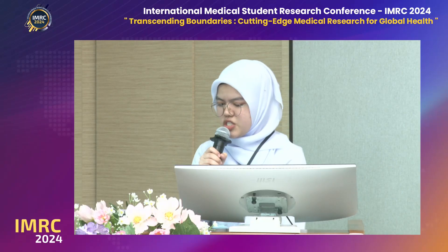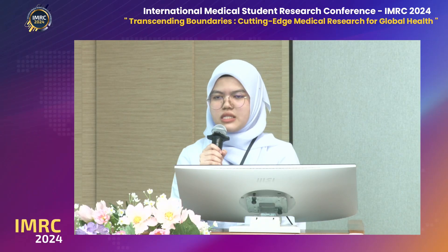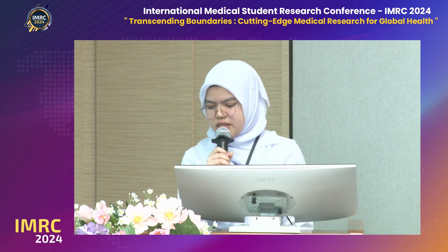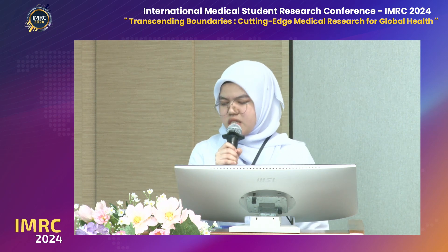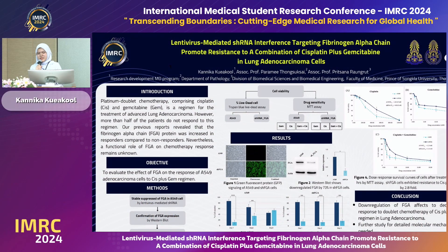Targeting fibrinogen alpha chain promotes resistance to a combination of cisplatin plus gemcitabine in lung adenocarcinoma cells. Lung adenocarcinoma is one of the most common types of lung cancer.